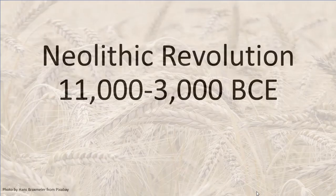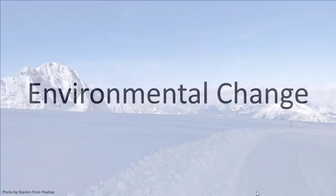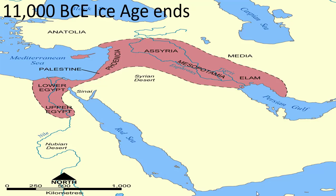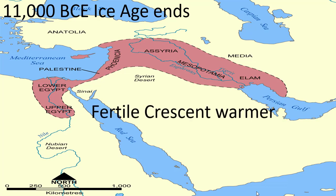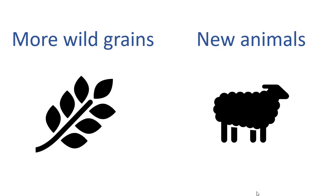When we get to 11,000 BCE, we enter a new era of human history — the Neolithic, or New Stone Age. This period saw stone tools still being made, but there were other crucial developments that fundamentally changed the nature of human life. This era will last until roughly 3,000 BCE, when bronze replaced stone as the main material used for tools. The biggest factor in the changes seen during the Neolithic era was environmental change — 11,000 BCE coincides with the end of the last Ice Age, so glaciers were retreating north while temperatures were rising.